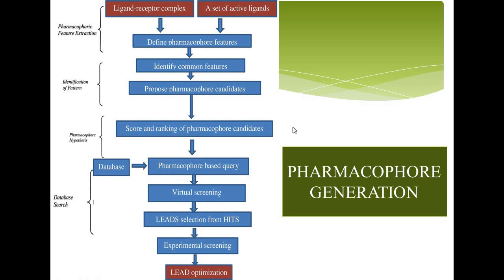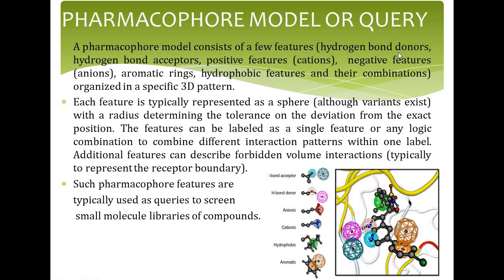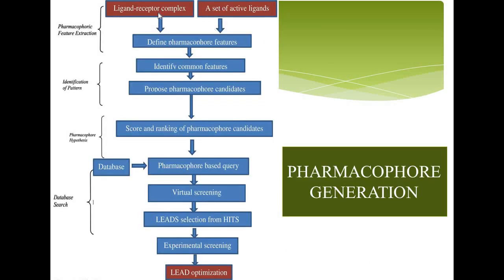Coming to the generation steps, the first step is Pharmacophore feature extraction, in which both structure-based and ligand-based Pharmacophore models are used to define the Pharmacophore features — hydrogen bond donors, hydrogen bond acceptors, positive features, negative features, aromatic rings, hydrophobic features and their combinations. The features relevant to Pharmacophore discovery are extracted from the input ligands, and the selected features from each ligand are combined to form a representation of the whole structure.